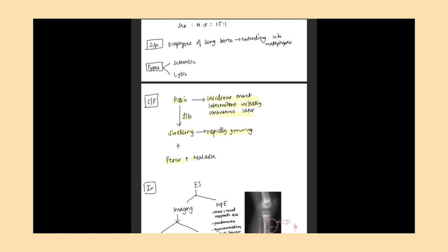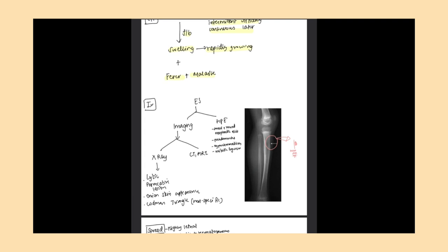Coming to investigations, there are two baseline tests: imaging and histopathological examination. On X-ray, we will see lytic permeative lesions, onion skin appearance, and Codman triangle. Codman triangle is a non-specific finding; onion pilling is also not specific but seen here.